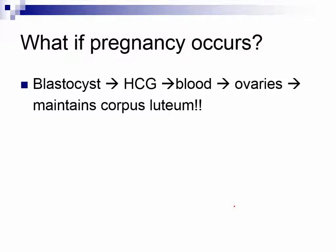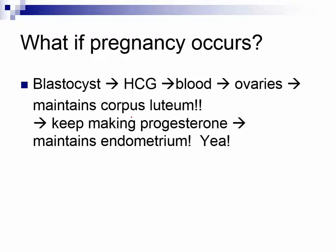So in summary: if a pregnancy occurs, the blastocyst secretes HCG, which travels through the bloodstream, targets the ovaries, and maintains the corpus luteum. Therefore the corpus luteum keeps making progesterone and maintains the endometrium. There's an embryo implanted — she's pregnant.